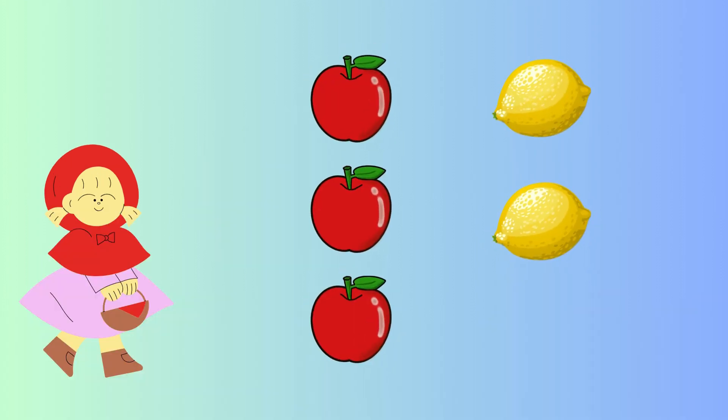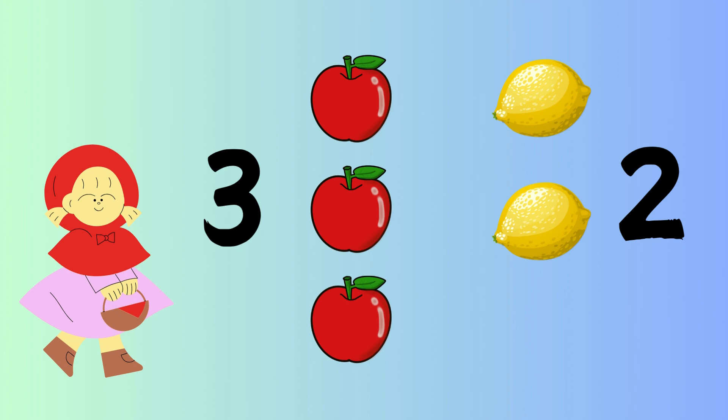Let's see how many apples and lemons she picked up. 1, 2, 3, she picked up 3 apples. 1, 2, and 2 lemons.